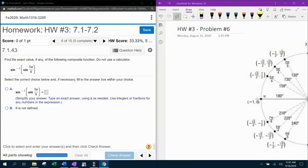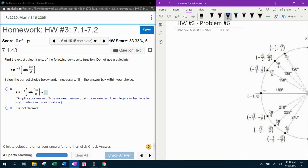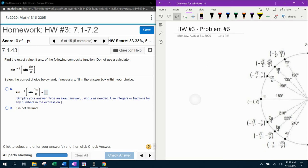Alright, here we go. Question number six from our 1316 homework number three in MyLabMath. They want us to find the exact value, if any, of the following composite function. Do not use a calculator, but we are going to use a calculator to check. We're going to start by copying this problem down. We've got the inverse sine of the sine of 5π/8.